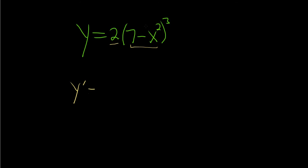So when we take the derivative, what we'll do is we'll bring the 3 down. So 3 times 2 is 6. We leave the inside piece untouched, so 7 minus x squared. Then we subtract 1, so 3 minus 1 is 2.